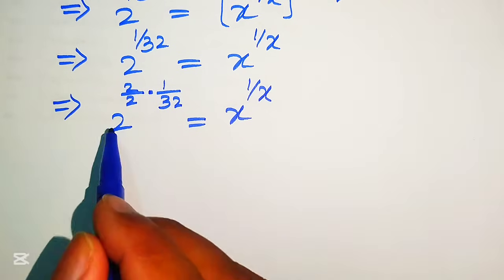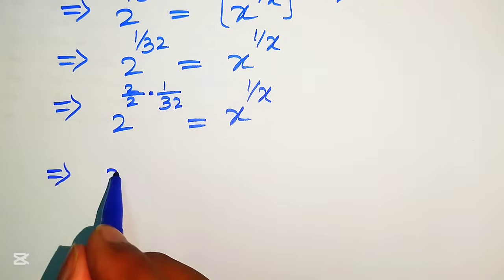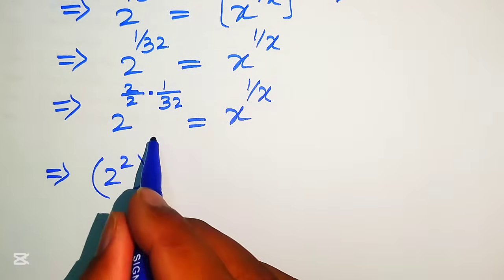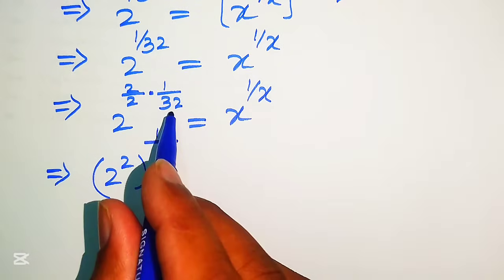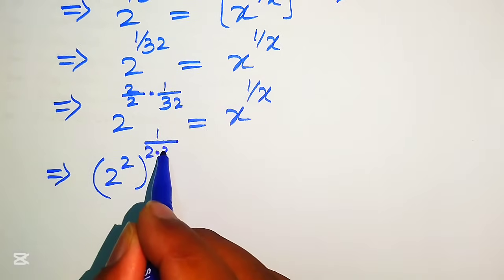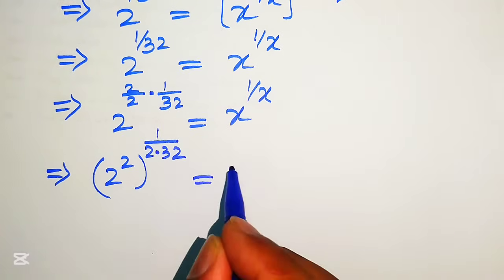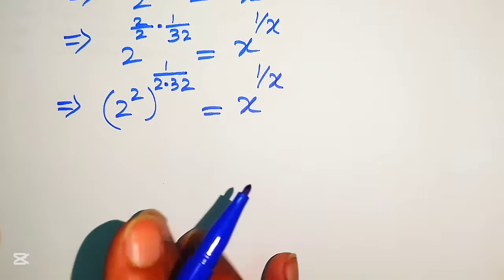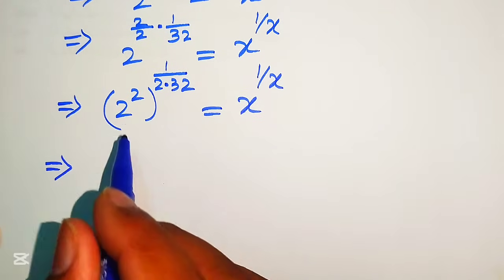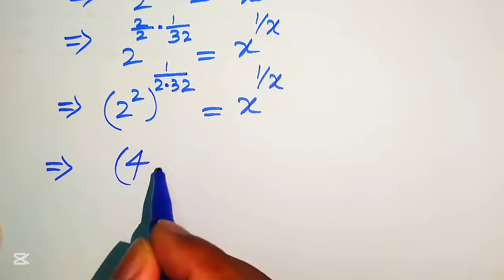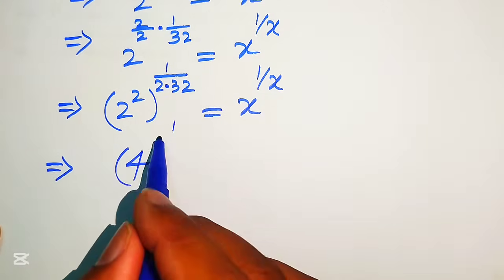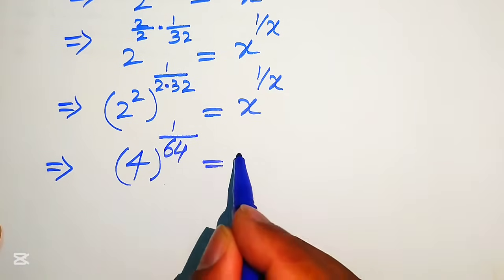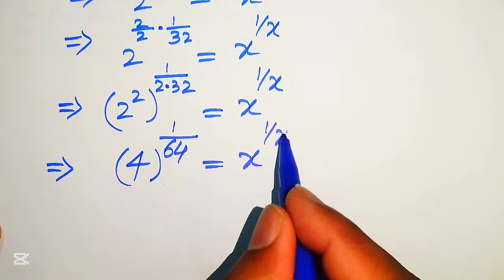We move this 2 inside the term, written as 2 squared, and multiply 2 with 32 to get 64. So we have 4 to the power of 1 over 64 equals x to the power of 1 over x. The exponent is still not the reciprocal of its base, so we repeat the process and again multiply and divide the exponent of 4 by 2.